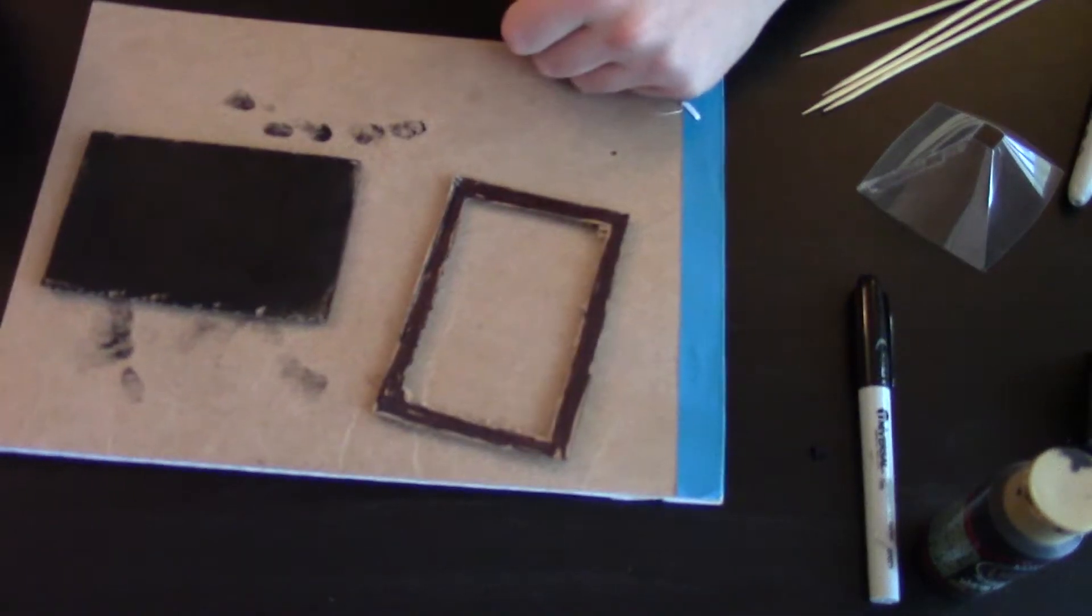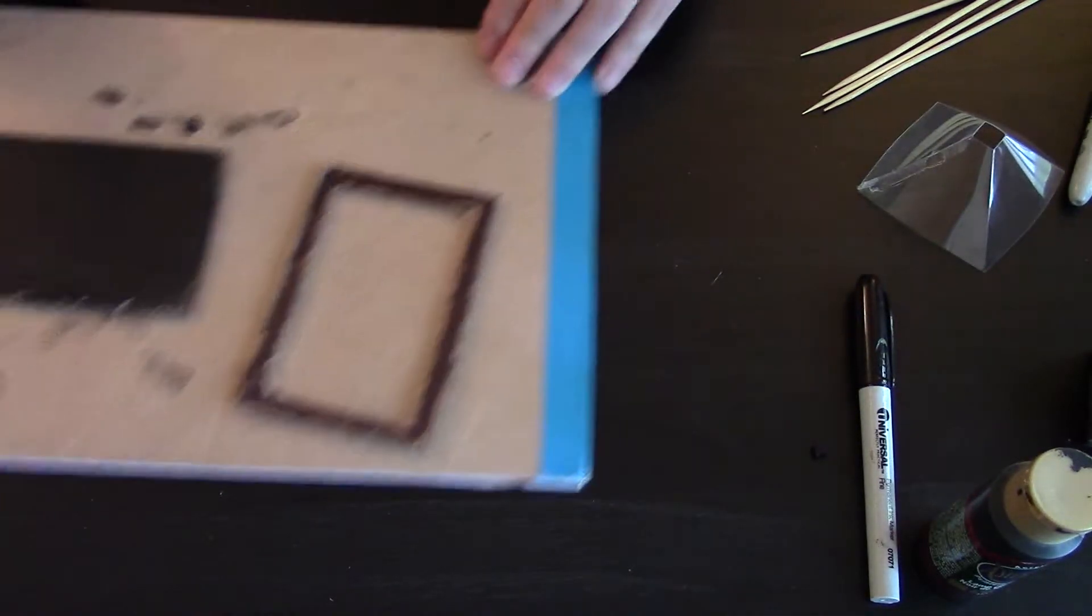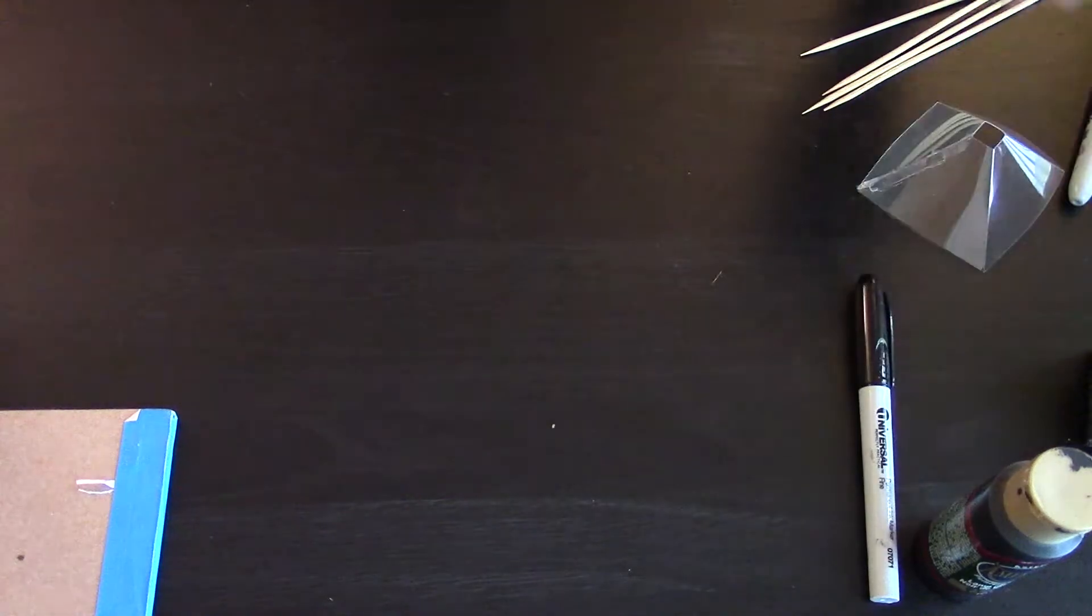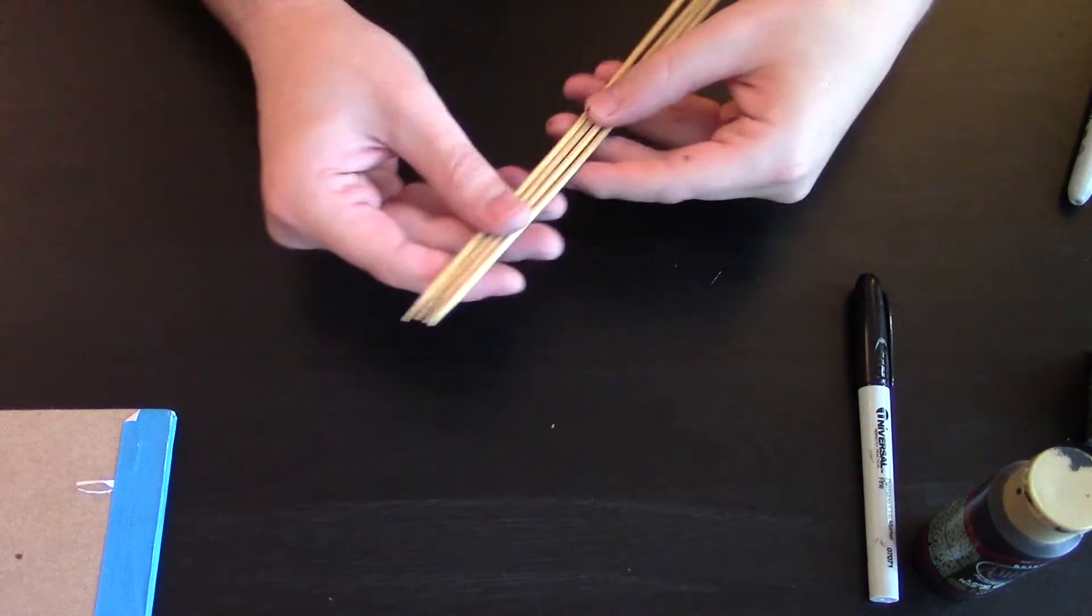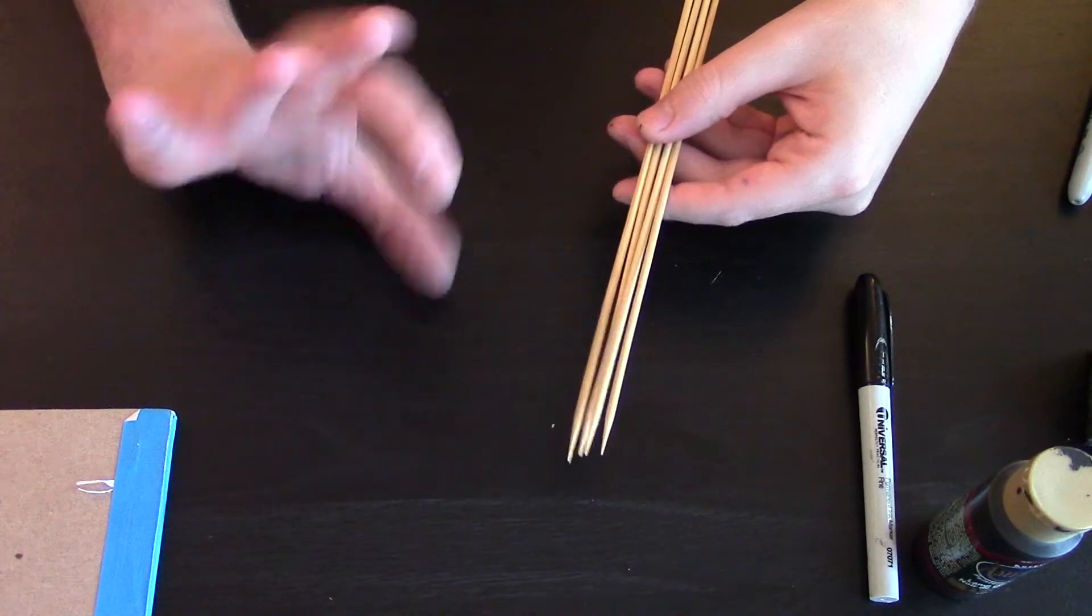Okay so we have our top and we have our bottom, and while those dry on to making the stands. So for the stands we are going to be using the shish kebab sticks and you want them to be about an inch and a half because that's how tall it's actually going to be.